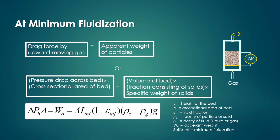At minimum fluidization condition, we can do a force balance: the drag force by the upward moving gas — which suspends the particles — will be equal to the apparent weight of the particles. We can write that drag force by upward moving gas equals apparent weight of the particles. We have already discussed in earlier lectures what is the definition of drag force and how to calculate it for different particle shapes. The drag force can be calculated from the frictional pressure drop across the bed.